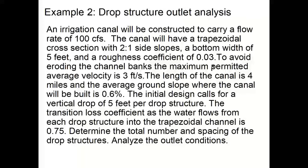Our second example in the hydraulic design of a drop structure: an irrigation canal will be constructed to carry a flow rate of 100 cubic feet per second. The canal will have a trapezoidal cross-section with 2:1 side slopes, a bottom width of 5 feet, and a roughness coefficient of 0.03.